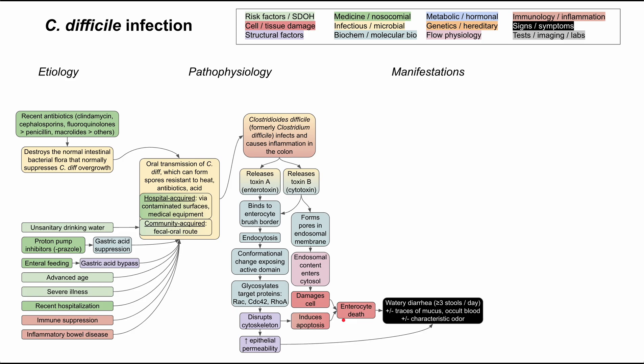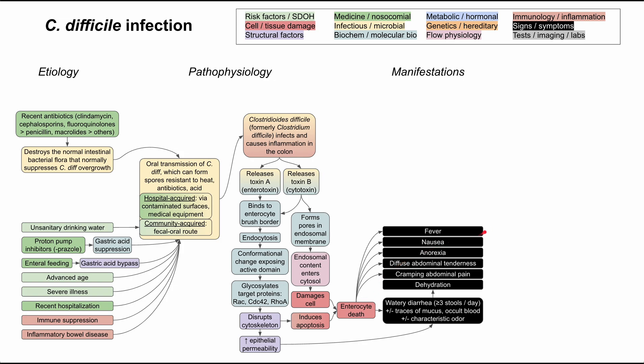The most prominent and famous symptom of C. diff infection is watery diarrhea. These patients will have at least three stools a day, and the stool can have traces of mucus and/or occult blood. Some medical workers claim that C. diff stool has a characteristic odor, though the evidence for that is uncertain. Watery diarrhea can lead to dehydration if the patient doesn't have adequate oral fluids or IV rehydration.